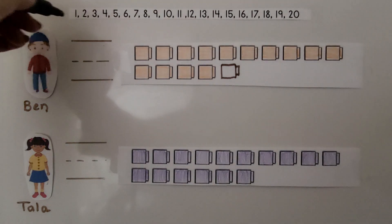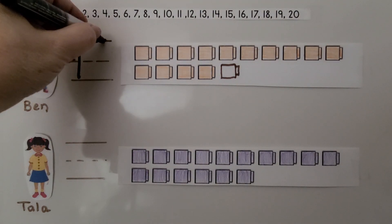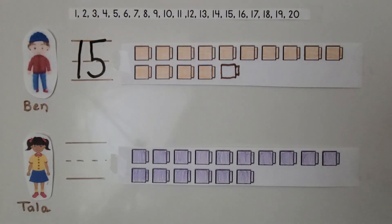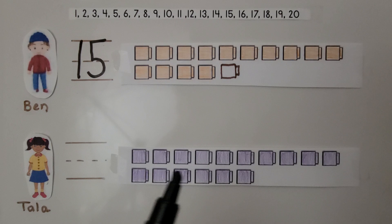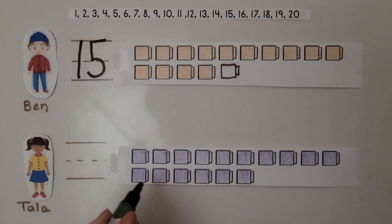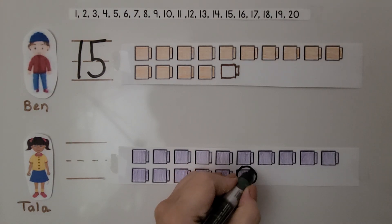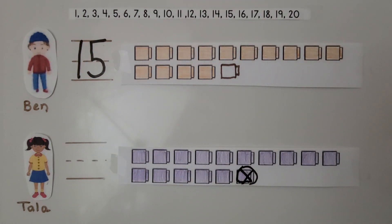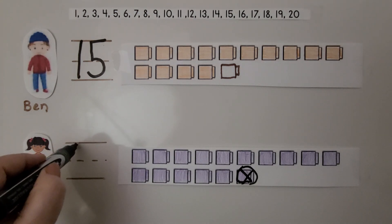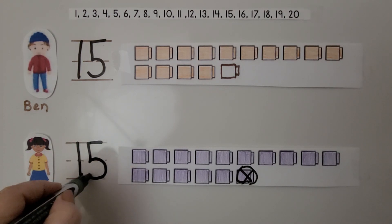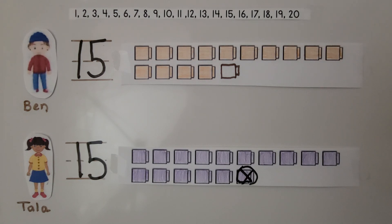We write 15 for the number of cubes Ben has. Tala has a number of purple cubes one less than 16. Here are 16 cubes — 10 ones and 6 ones. We cross off one cube to show one less than 16. She has 10 ones and 5 ones — that's 15. We write 15. That means they both have 15; they have the same number of cubes. The number of cubes they have are equal. 15 is equal to 15.